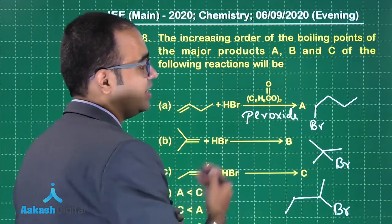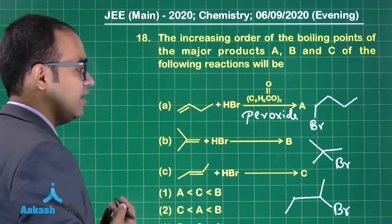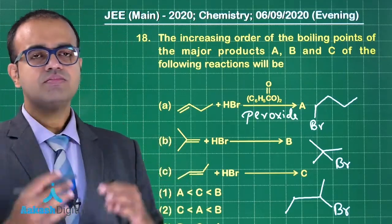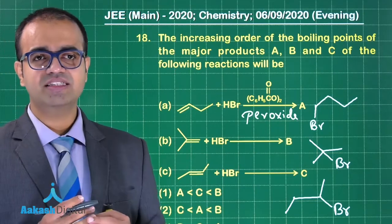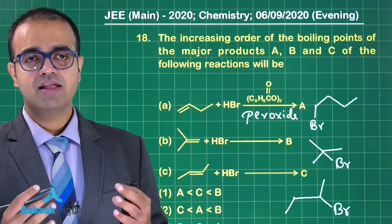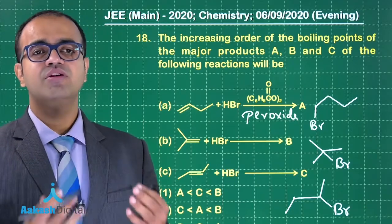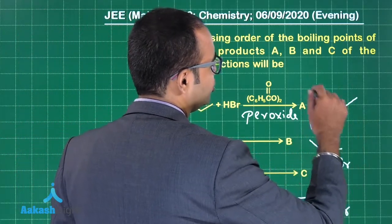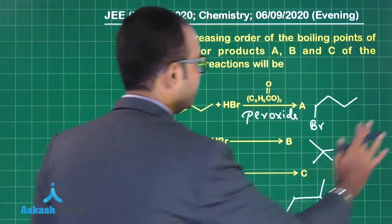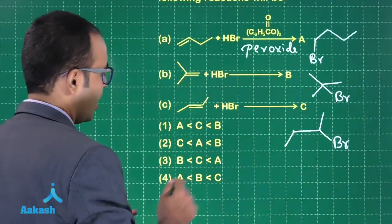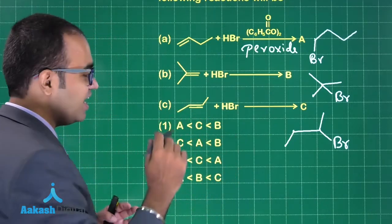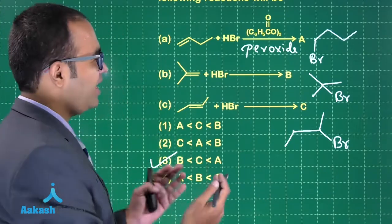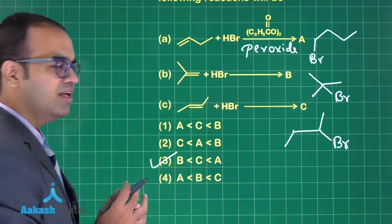Now we compare the boiling points of A, B, and C. The criterion for boiling point is: if a molecule is linear with less branching, the boiling point will be higher — boiling point is inversely proportional to branching. Compound A has no branches, so A has the highest boiling point. Only option 3 has A with the highest boiling point, so that is our answer.